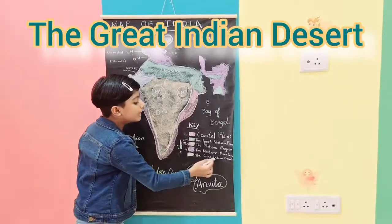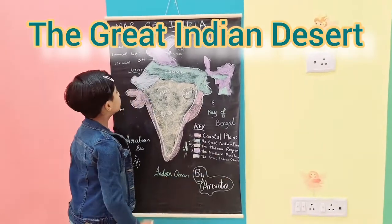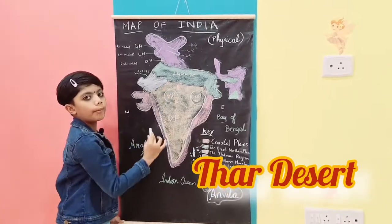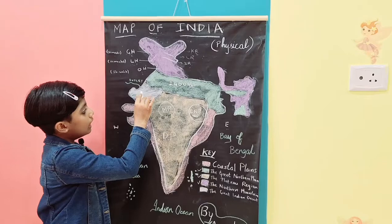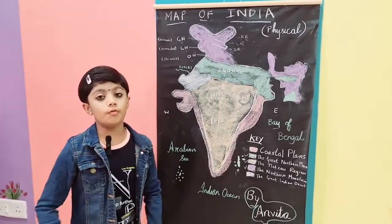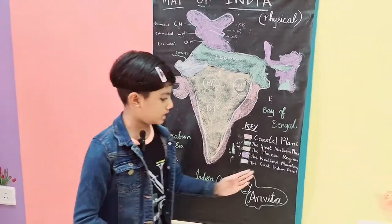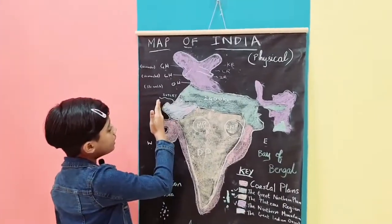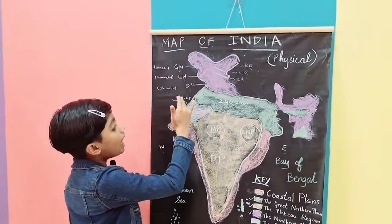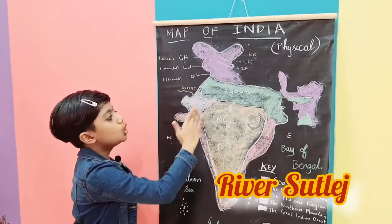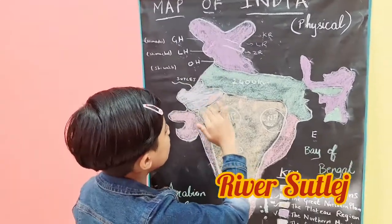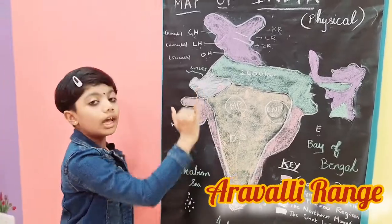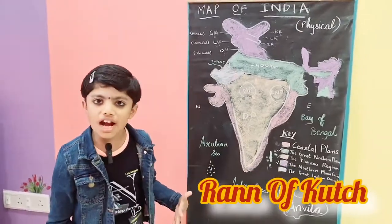Now let's go to the Great Indian Desert. The Thar Desert lies on the north-western part of India. It covers most parts of Rajasthan and is also called the Great Indian Desert. Towards the west of the desert we have the River Sutlej, towards the east we have the Aravalli Range, and towards the south we have the Rann of Kutch.